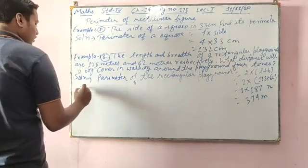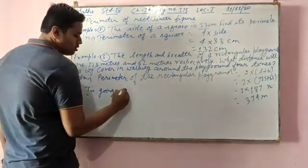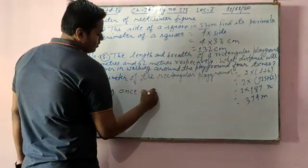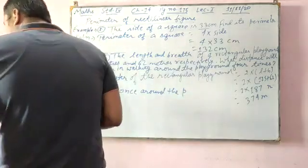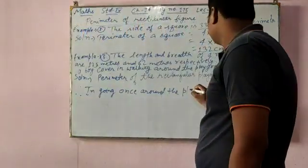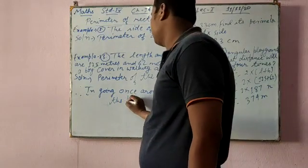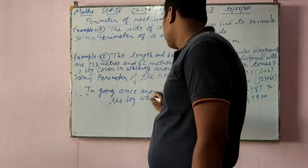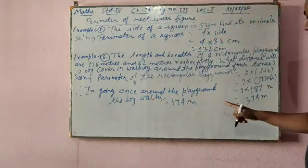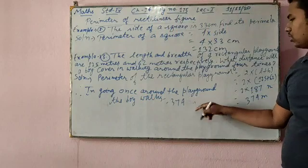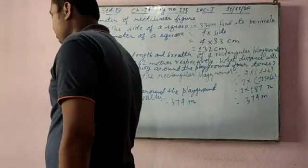But one more question is there. What distance will a boy cover in walking around the playground 4 times? See, in going once around the playground, the boy walks 374 meters. It is perimeter long. In one round, once, one time he has gone, then he walks 374. So therefore,